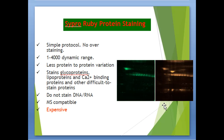SYPRO Ruby protein staining: the protocol is simple with no over-staining. It has a one-to-four-thousand dynamic range with less protein-to-protein variation. It stains glycoproteins, lipoproteins, and calcium-binding proteins, as well as other difficult-to-stain proteins. It does not stain DNA and RNA, is mass spectrometry compatible, but it is expensive.